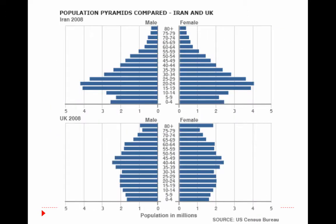Here is a comparison of population pyramids between Iran and the UK in 2008. Iran has a spike among young people from 15 into the early 30s for both genders. Whereas the UK shows more of a middle-aged and elderly population, with a higher proportion of people in retirement years. This is why the UK faces real dilemmas in supporting people, especially with the National Health Service.